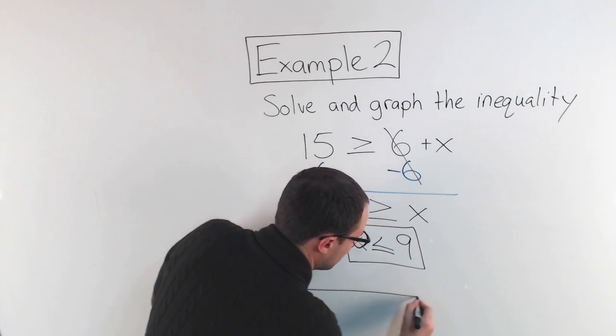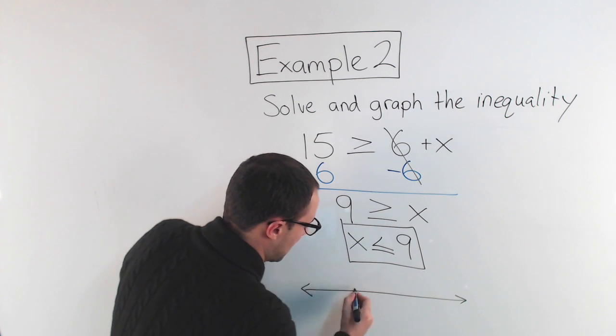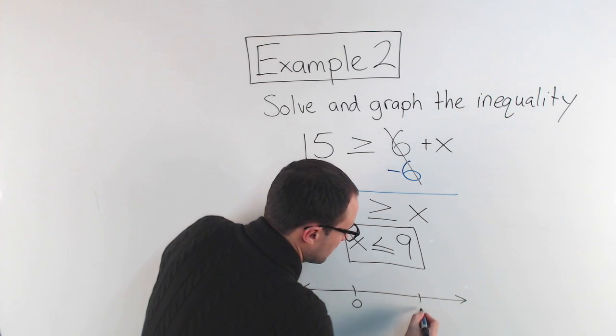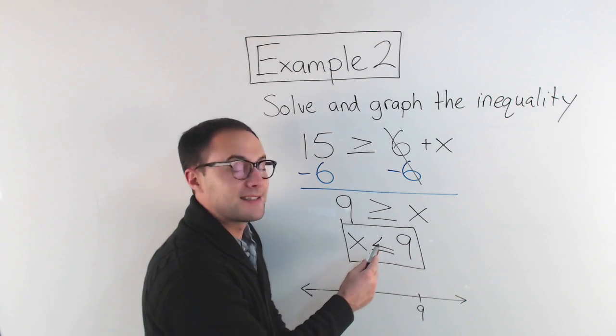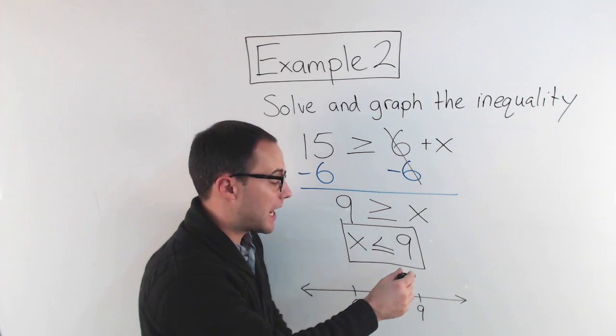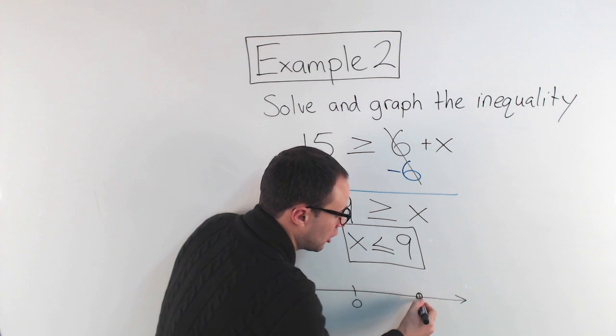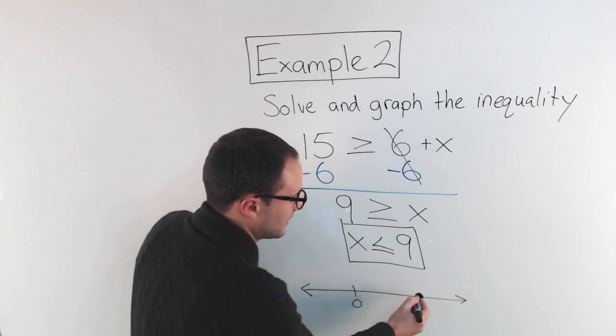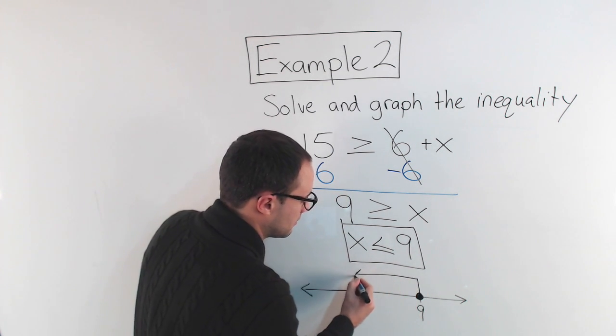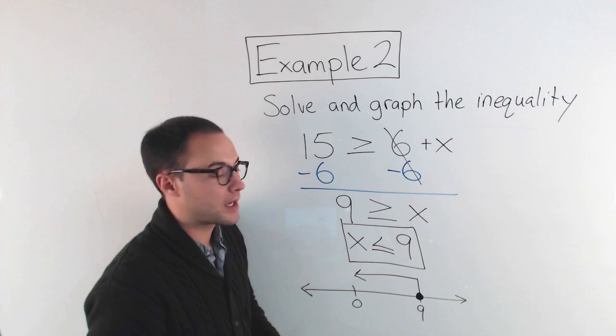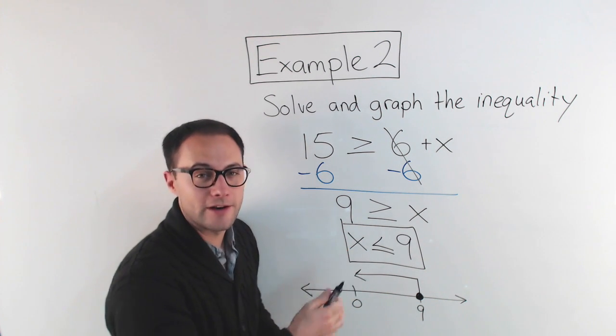So again, make your number line. I'm going to have 0, 9. x is less than or equal to 9, which means I'm going to have my closed circle or closed dot at 9, and less than, so my arrow is going to the left. Okay? There's my solution, and there's my graph.